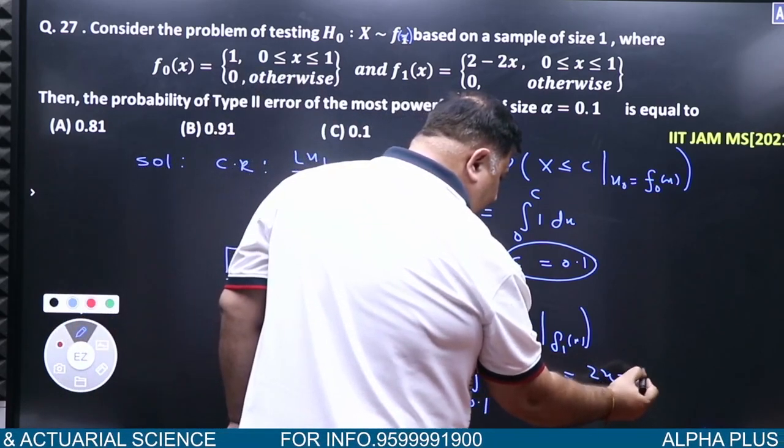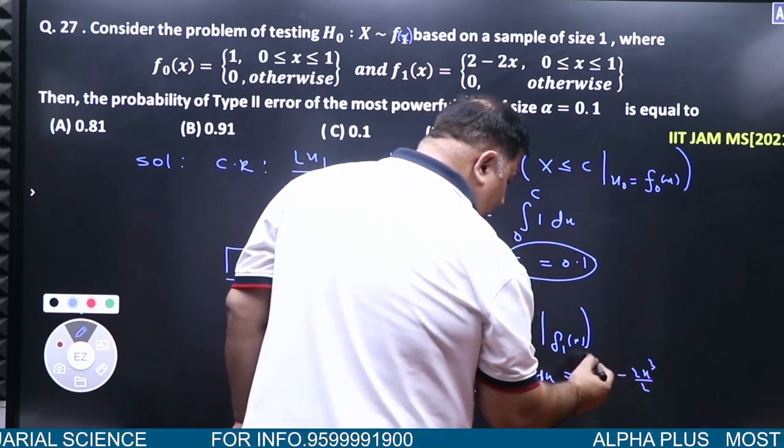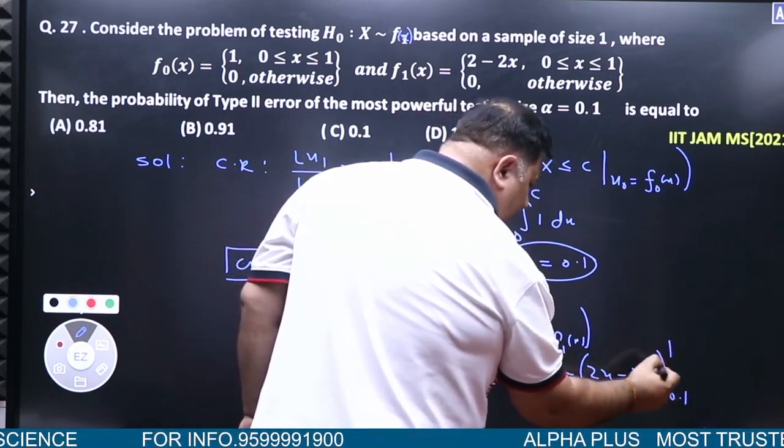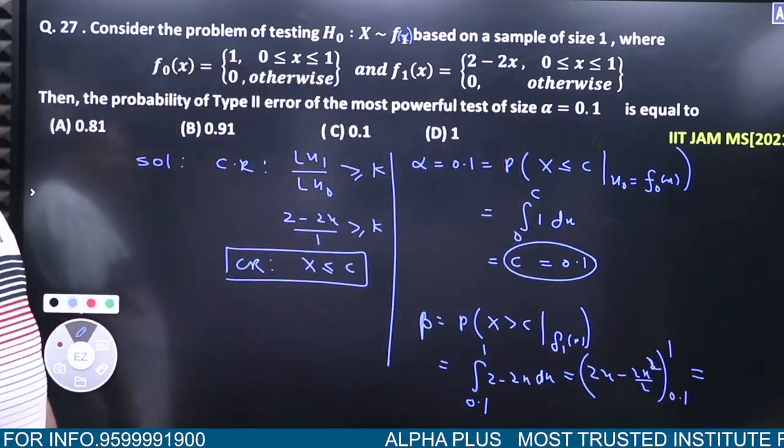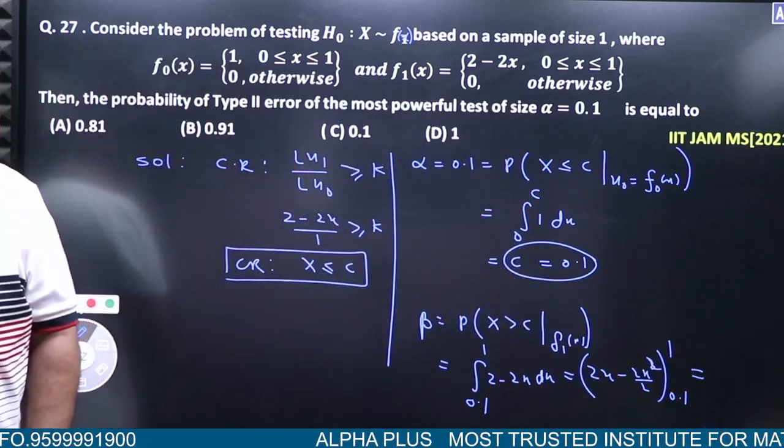2x minus 2x squared by 2, from 0.1 to 1. Can someone tell me what answer we'll get? 0.81 will come.